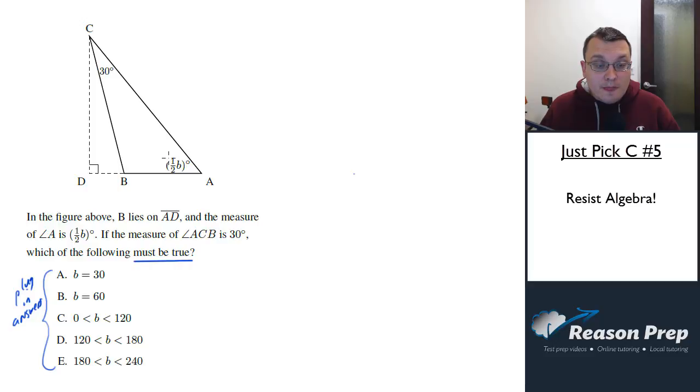So we start with B is 30. We would plug this in and just see what consequences follow. If B is 30, that would mean this angle would be 15 because it's one half B, which means this would add up to 45, which would mean this angle would have to be 135 because they've all got to add up to 180.